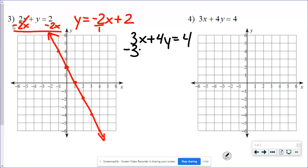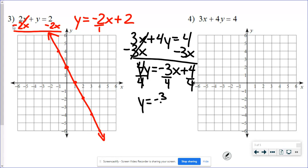I would start by moving my 3x. So 4y equals negative 3x plus 4. Remember, we like to have that x part first so it looks like slope-intercept form. Then we're going to divide by 4. But everything divides by 4.